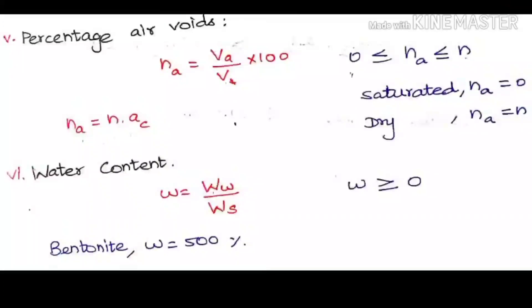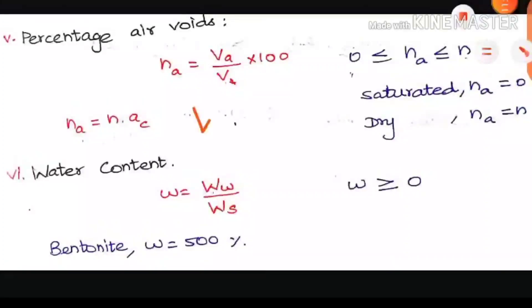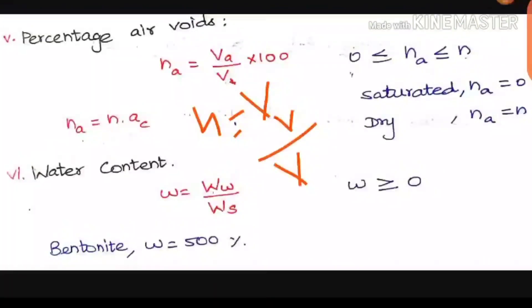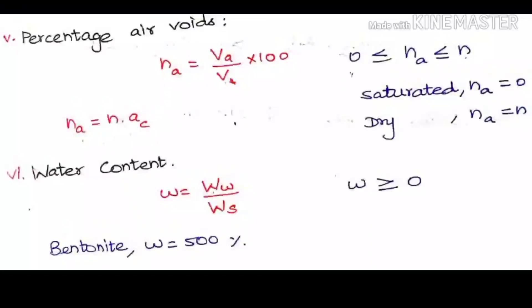The fifth property is percentage air void, denoted by NA, which equals volume of air divided by total volume. This is similar to the porosity formula (n = VV / V), but here only air fills the voids. The range of NA is from 0 to n, because the maximum air can fill is the total void space. When completely filled with air it is dry soil and NA = n; when completely filled with water it is saturated soil and NA = 0. The relation is: NA = n × AC.